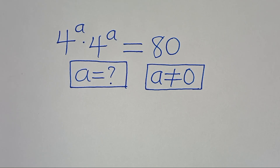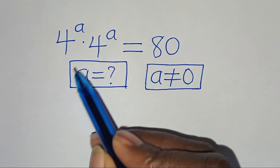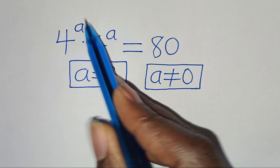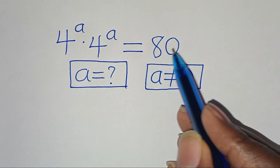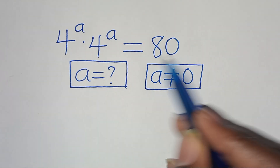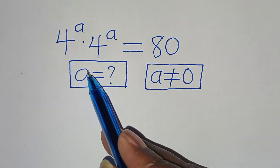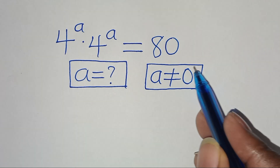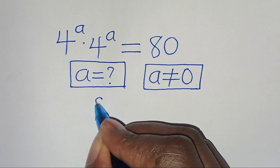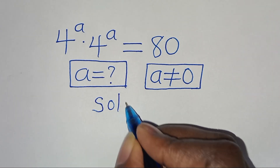Hello everyone, you're welcome to solve this nice exponential equation: 4 to the power of a times 4 to the power of a equals 80. What is the value of a, given that a is not equal to 0? Let's provide a solution.